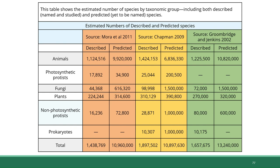This table here shows a comparison between the number of species of each type that have been described versus how many are predicted to be out there but not yet identified. The way scientists make these predictions is by taking a group of organisms that have been very thoroughly studied, like insects or a subgroup of insects, and counting the number of species identified in different zones on Earth, arriving at a ratio of how many exist from zone to zone. Then they use that ratio to make predictions about how many species there are across different biomes and with other groups of organisms that haven't been studied as extensively.